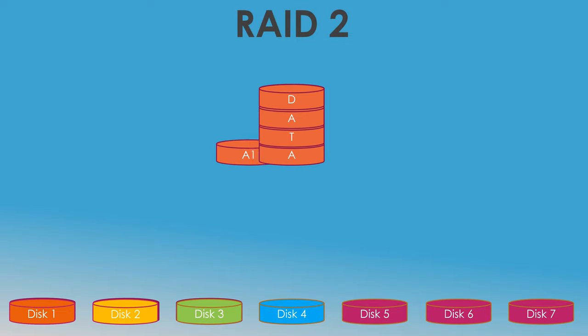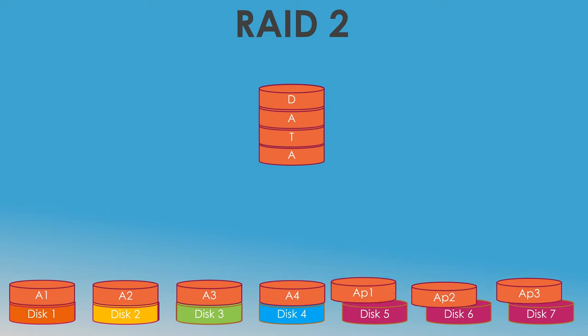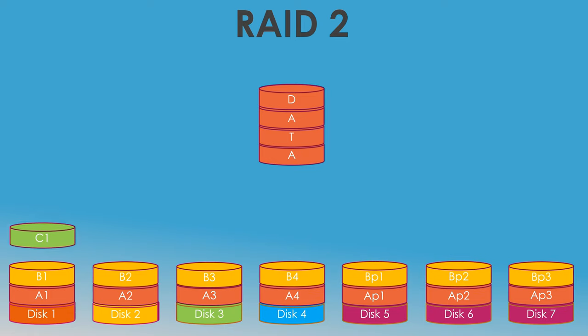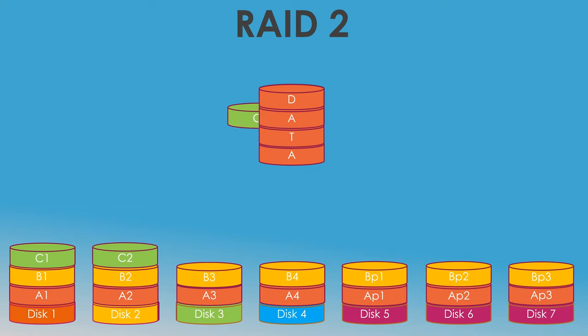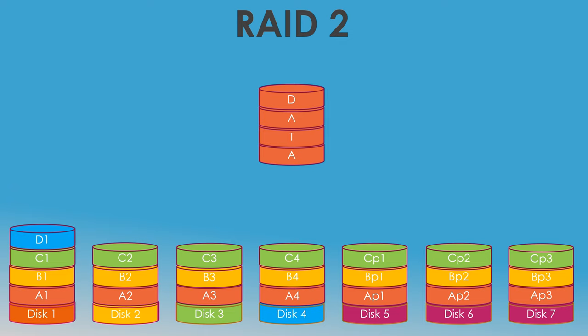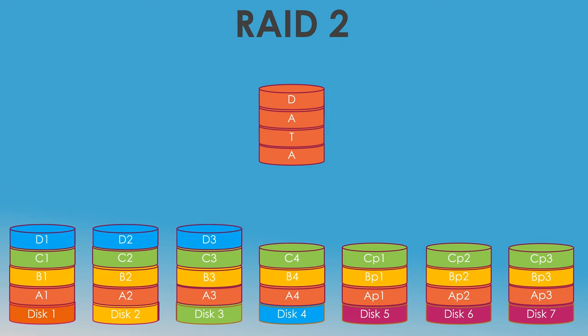RAID 2, 3, and 4 are quite rare and less popular, as they make use of Hamming code for error corrections, stripping data at the bit rather than the block level, and checksums. In RAID 2, information is spread across data drives just as in RAID 0 — it is divided into small blocks according to the number of drives. The remaining drives are designed to store ECC, or error correction code data, which could be used for recovering information should any of the data drives fail. A prominent advantage of this RAID type is extremely high data transfer rates compared to results achieved by a single disk.